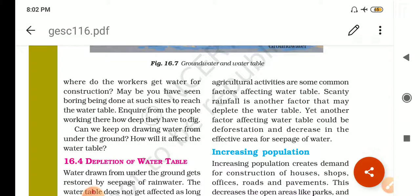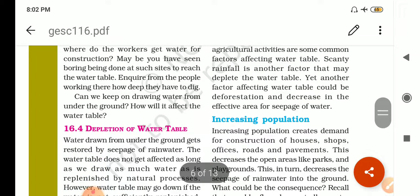Could be deforestation and decrease in the effective areas for the seeping of the water. Here, if construction is too much, if roads are there, buildings are there, then obviously in that particular area the water table will go down because there is no plain area so that the water can seep inside the ground. Or we can say there is less area for the infiltration of the water.